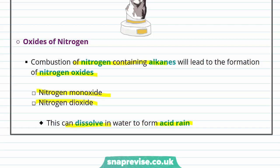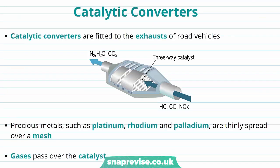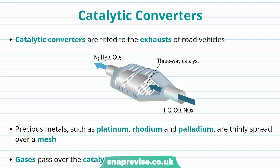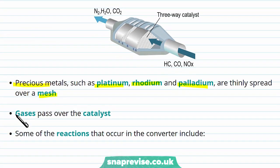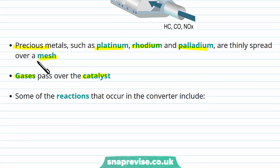Many of the products of incomplete combustion are not ideal, and that's why catalytic converters are so important. Catalytic converters are fitted to the exhaust of road vehicles. They use precious metals such as platinum, rhodium and palladium, which are thinly spread over a mesh as you can see in our diagram. Gases such as carbon monoxide and nitrogen oxides pass over the catalyst and are converted into less harmful gases such as nitrogen, water and carbon dioxide. Some of the reactions that occur include the conversion of carbon monoxide into carbon dioxide, and the conversion of harmful nitrogen monoxide.